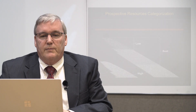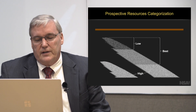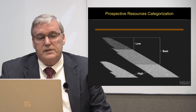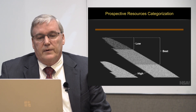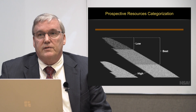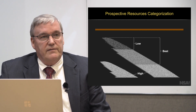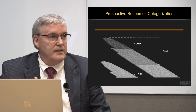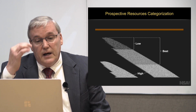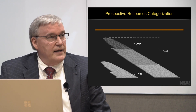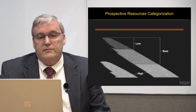As an example, let's start with the prospective resources categorization. On this chart we're seeing in gray two different reservoirs with no wells drilled at this point. These are exploration prospective resources we've estimated from our seismic information and other data from our geologists and petrophysics from the area — a low, best, and high estimate in our prospective resource categorization.